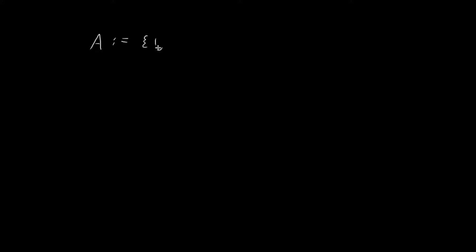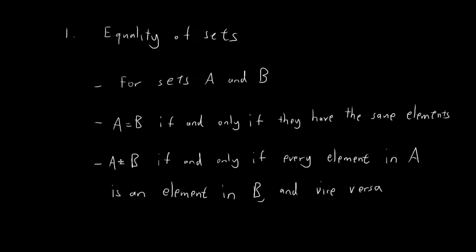Now for our final example, let's say A is defined to be the set consisting of the numbers 1, 2, and 3. And B is defined to be the set consisting of the numbers 1, 2, 3, and 3. We want to figure out whether A is equal to B or not. Going back to the definition, if A is equal to B, then every element in A is also an element in B, and every element in B is also an element in A. If we can verify both conditions, then we can conclude that A is equal to B.